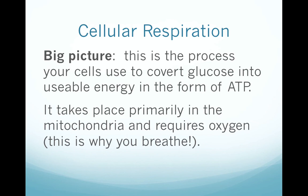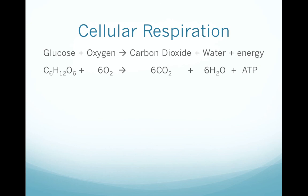Also in this chapter is a discussion of cellular respiration. This is a rather complicated process and it's easy to get lost in the details, so before you begin studying it in earnest, make sure you understand the big picture concepts. Cellular respiration is the process your cells use to convert glucose into ATP, which is a usable form of energy. It takes place primarily in the mitochondria and requires oxygen to run to its full completion. In fact, this is the entire reason that you breathe — to take in oxygen for cellular respiration and get rid of carbon dioxide, which is a waste product.